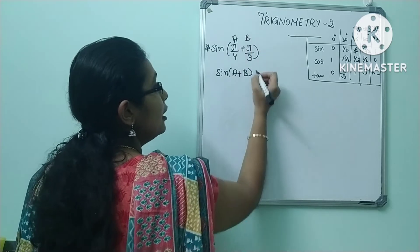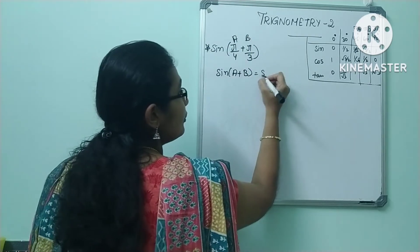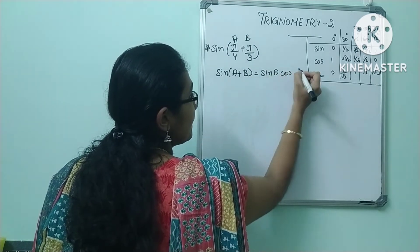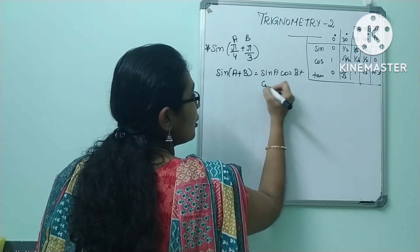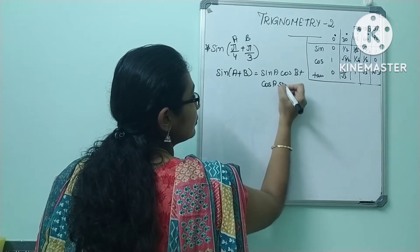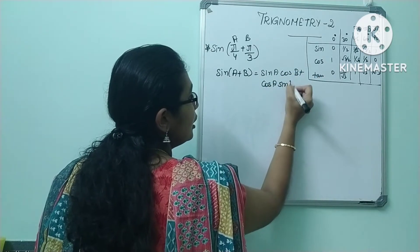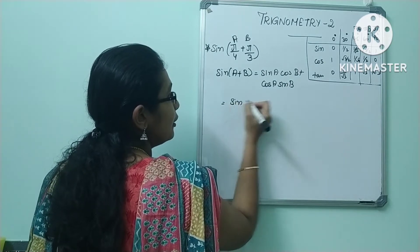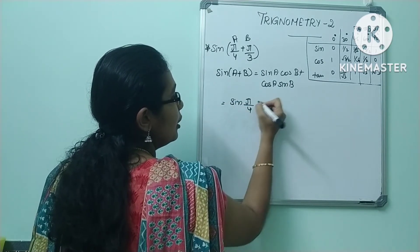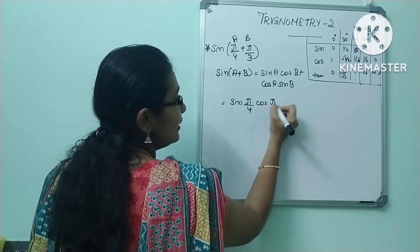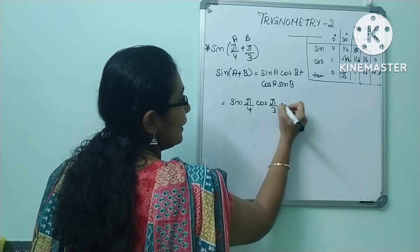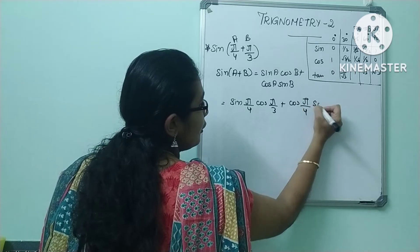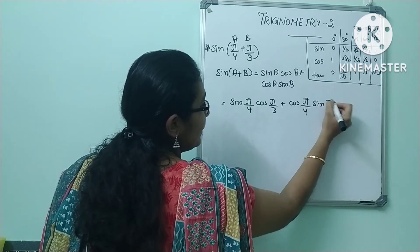This is 'a' and this is 'b'. This is the formula: sin a cos b + cos a sin b. Now we will expand: sin(π/4)cos(π/3) + cos(π/4)sin(π/3).